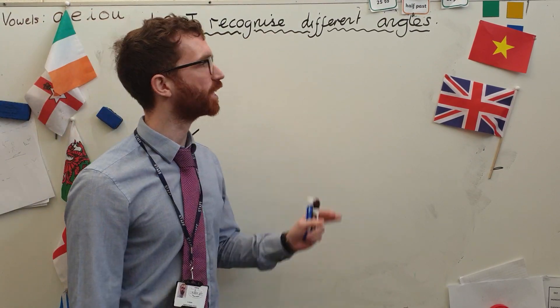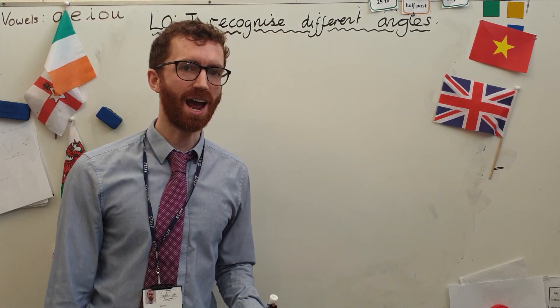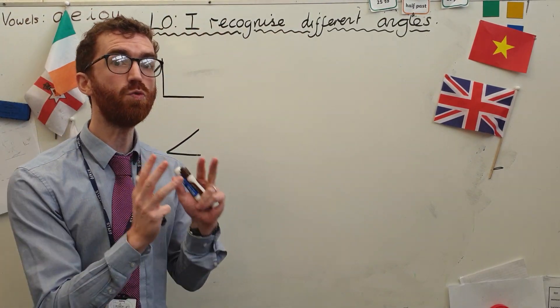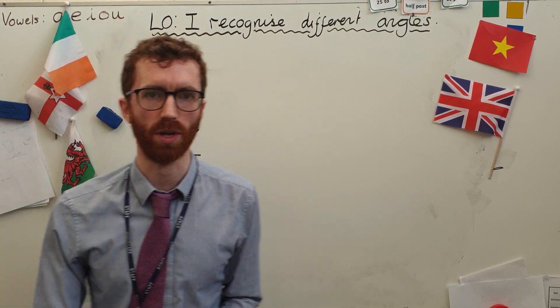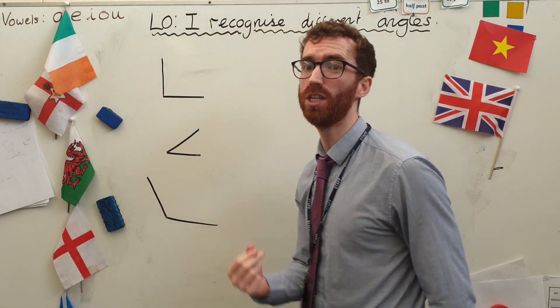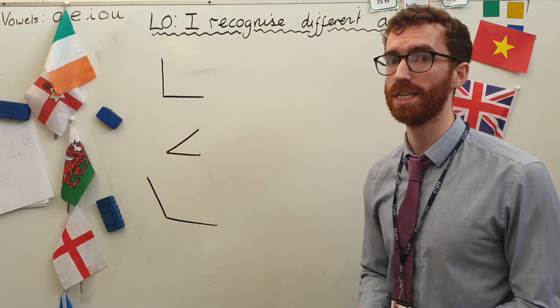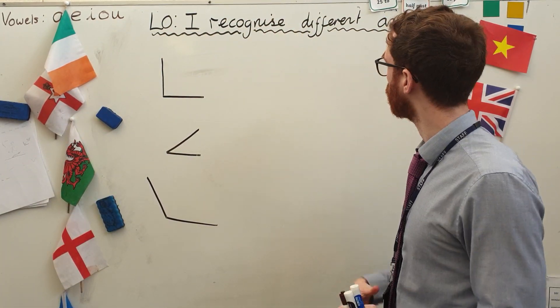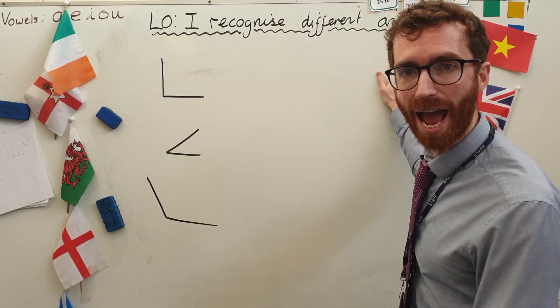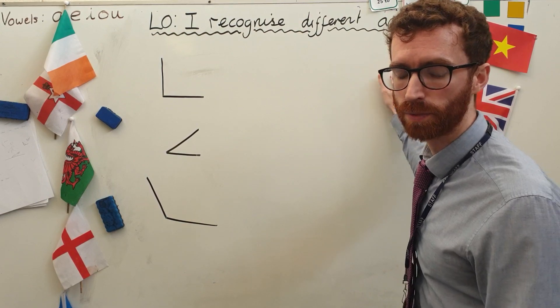Our learning objective is: I recognise different angles. This is a really easy one, it's a really quick one. There are only three things that you're going to need to know about this. But first of all, let's understand what an angle is.